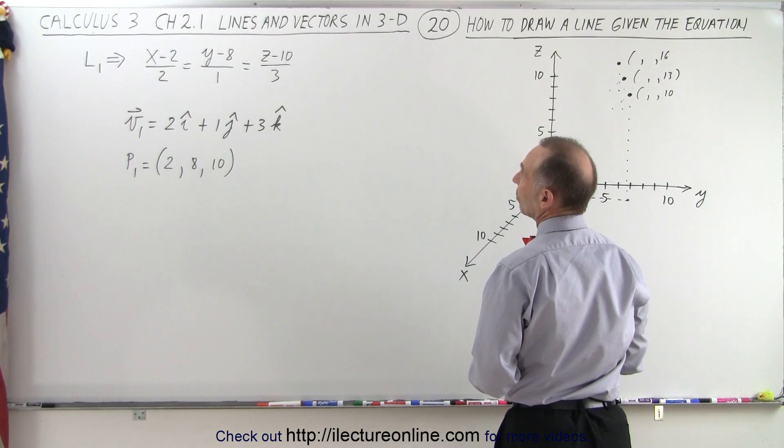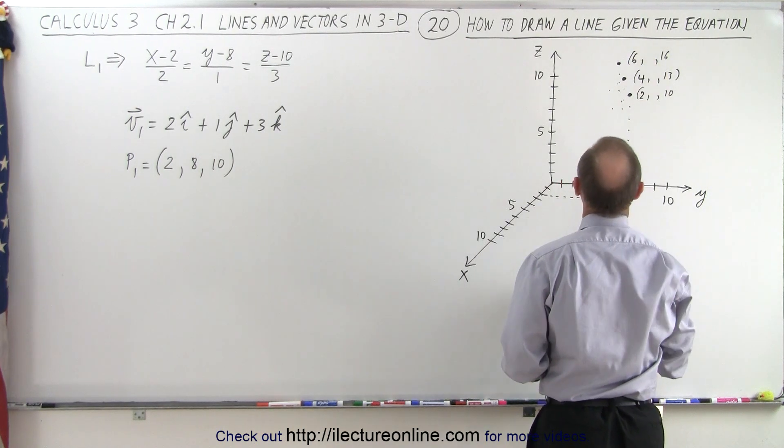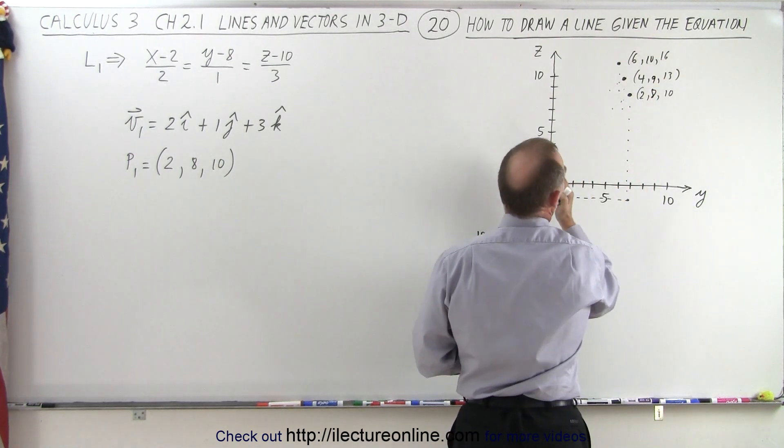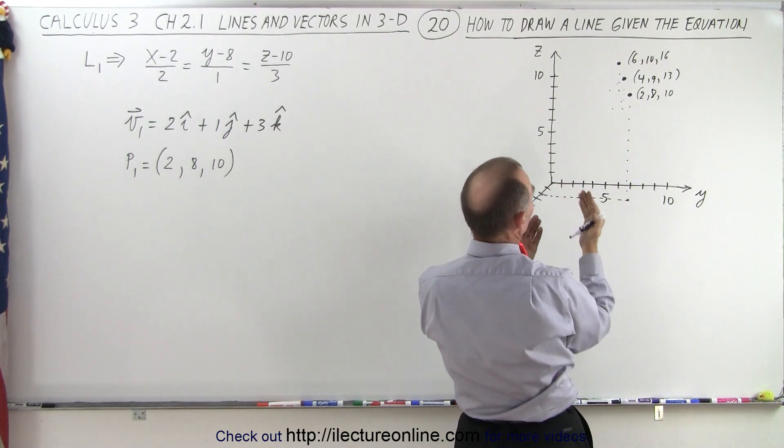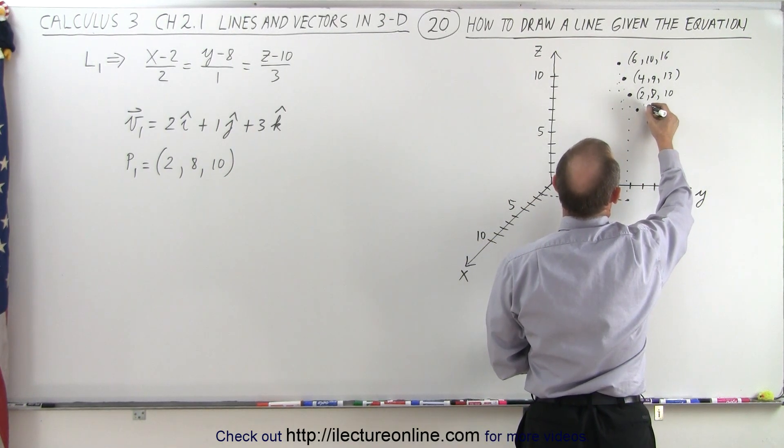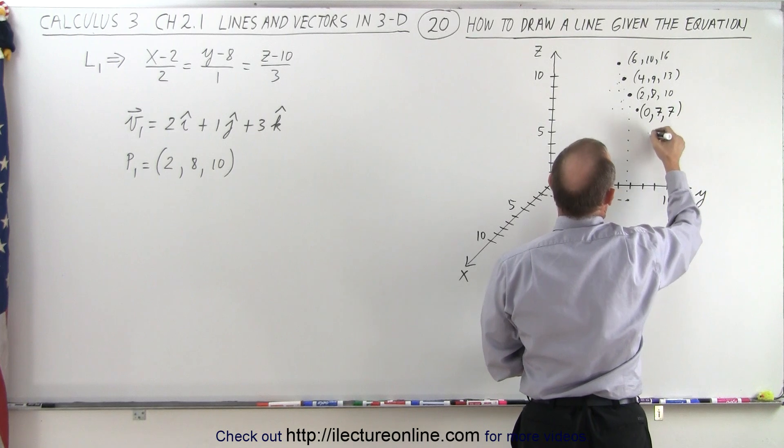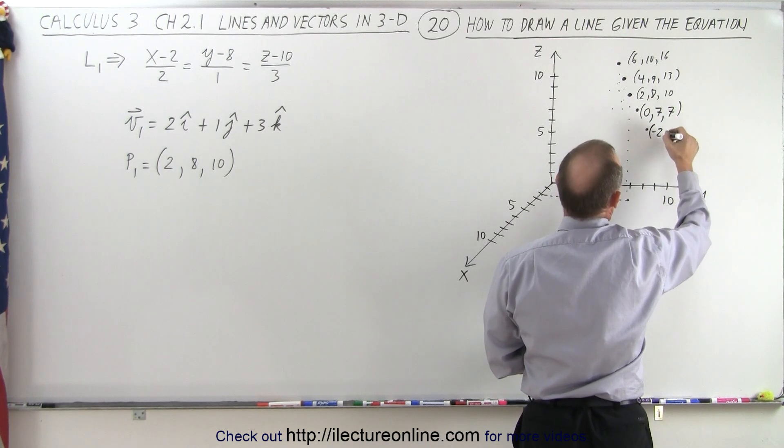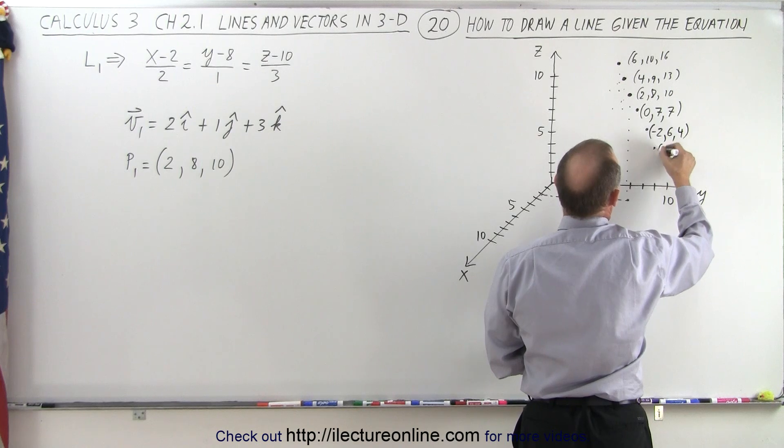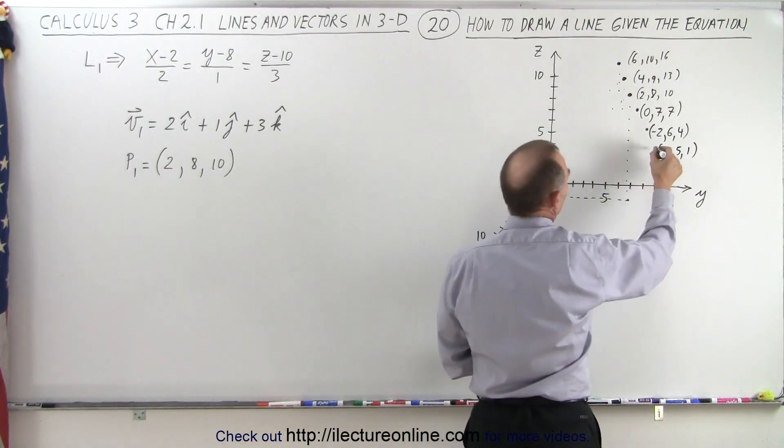So I go up in the z-direction here. Notice that I started at 2 in the x-direction and I add 2 each time so this is 2, this is 4, this is 6 in the x-direction. For the y-direction I start at 8 and I go to 9, I go to 10. So I go slightly outward, I go forward in the x-direction and I go upward. Going backwards, notice that I find the next point right here that gives me the point 0, so now x is 0, y is 7 and z is 7. The next point over here would be x being negative 2, y being 6 and z being 4. If I go another point like this then I have x equal negative 4, y equals 5 and z equals 1.